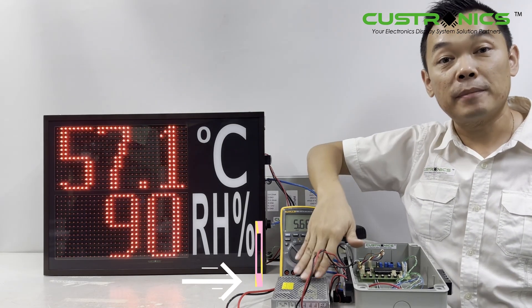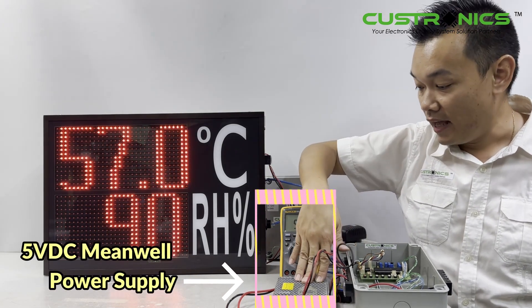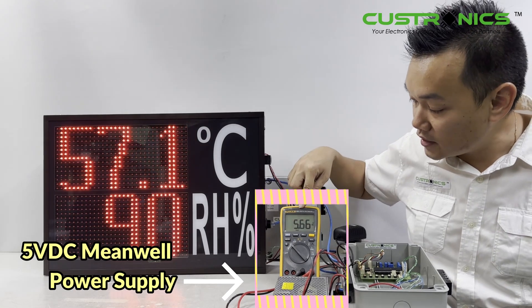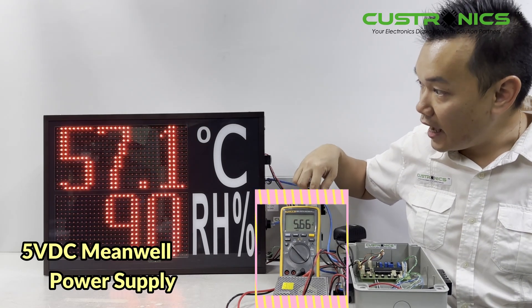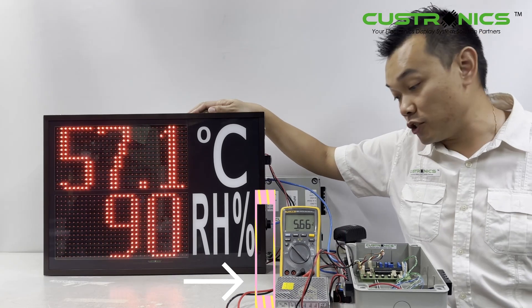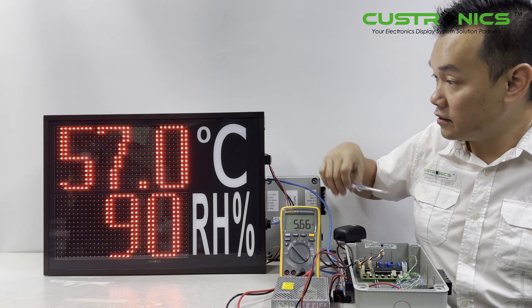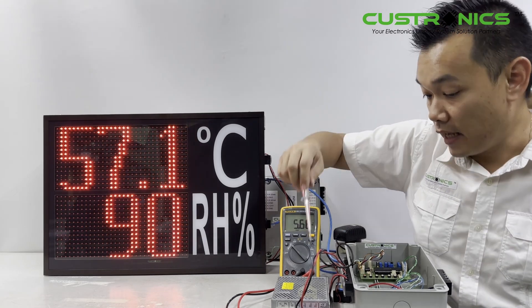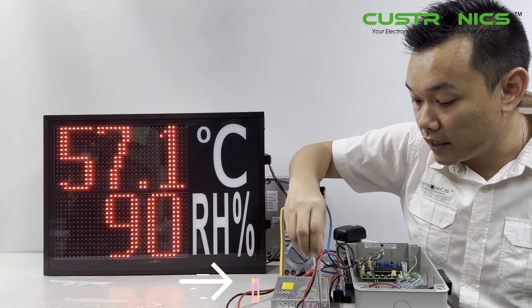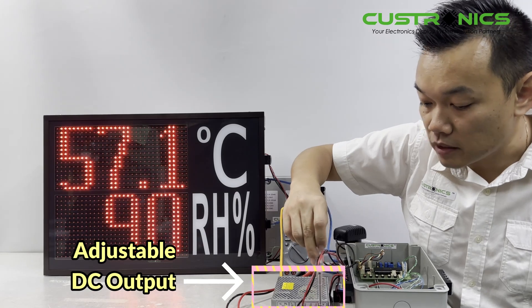Here I can see this is a main real power supply, and the output now is 5.66 volts. Our display shows 57.1. It's actually a 0.05 difference, which doesn't matter. We just need a rough estimation. Let me hide the power supply.